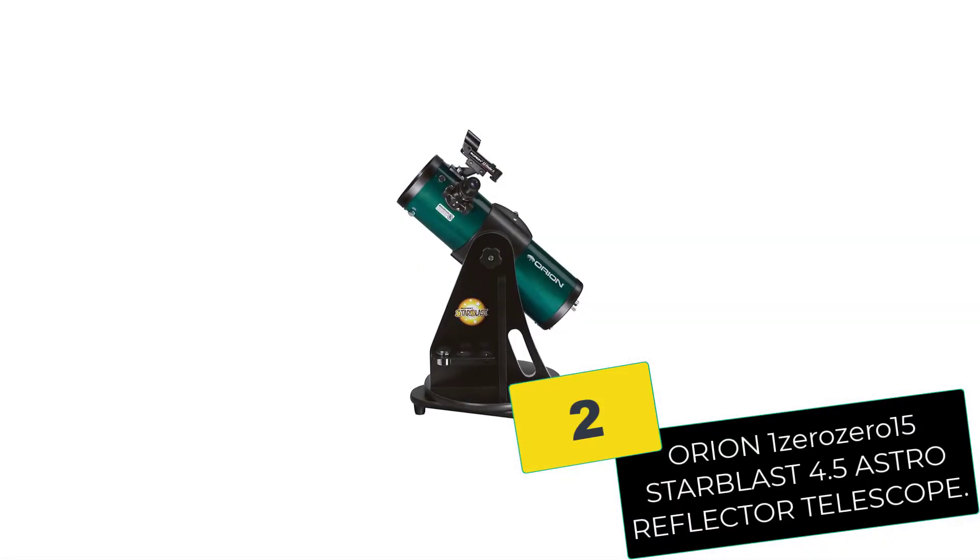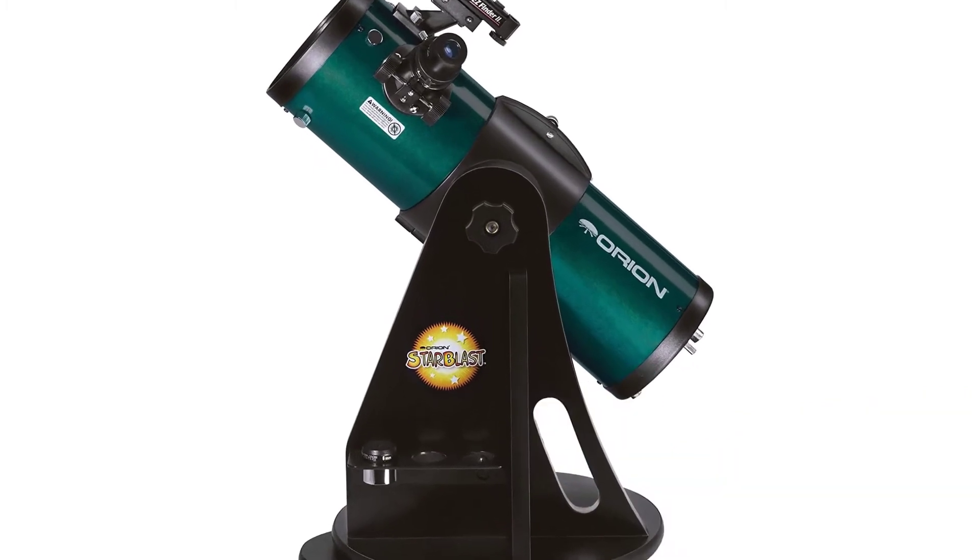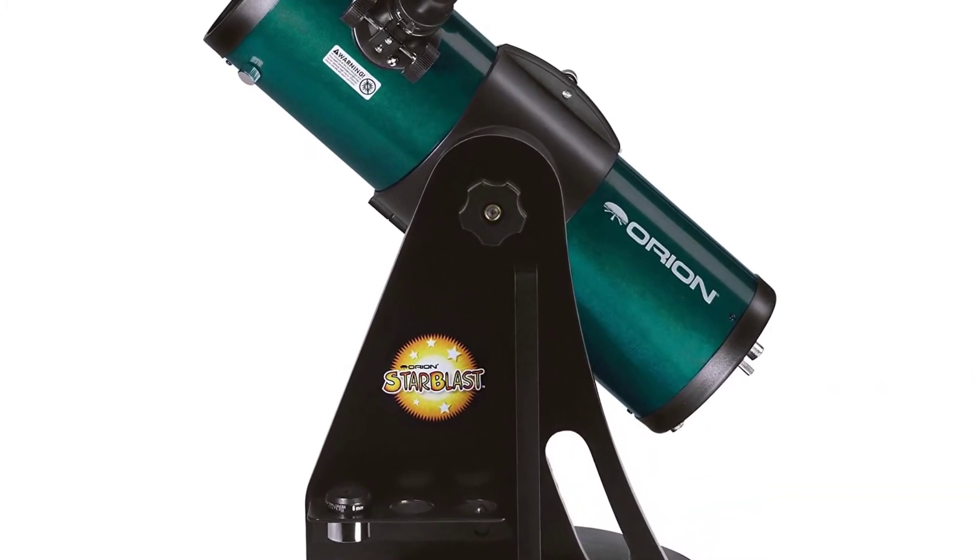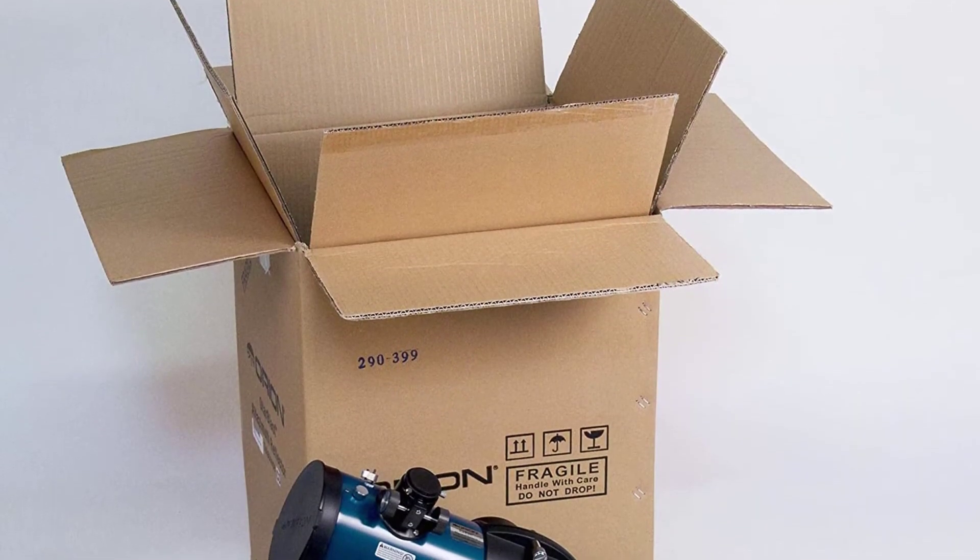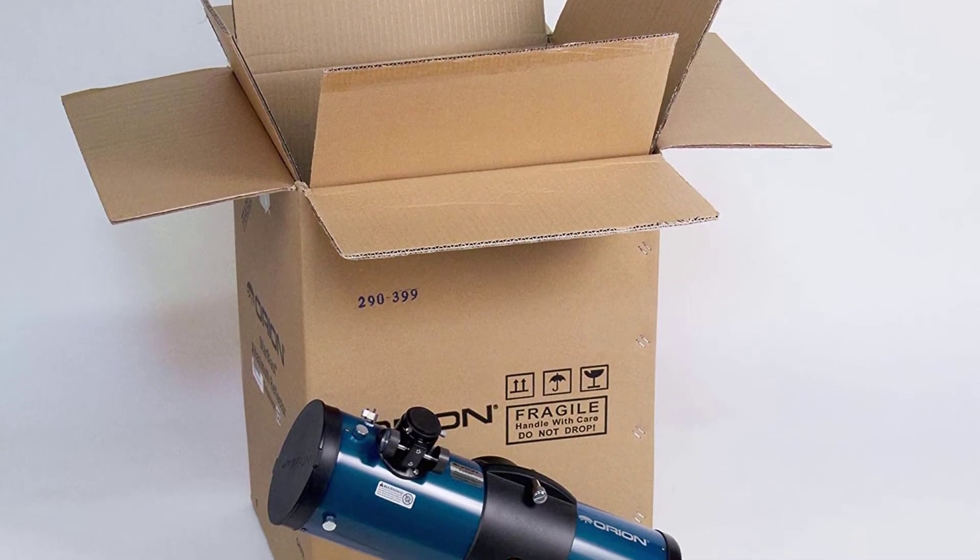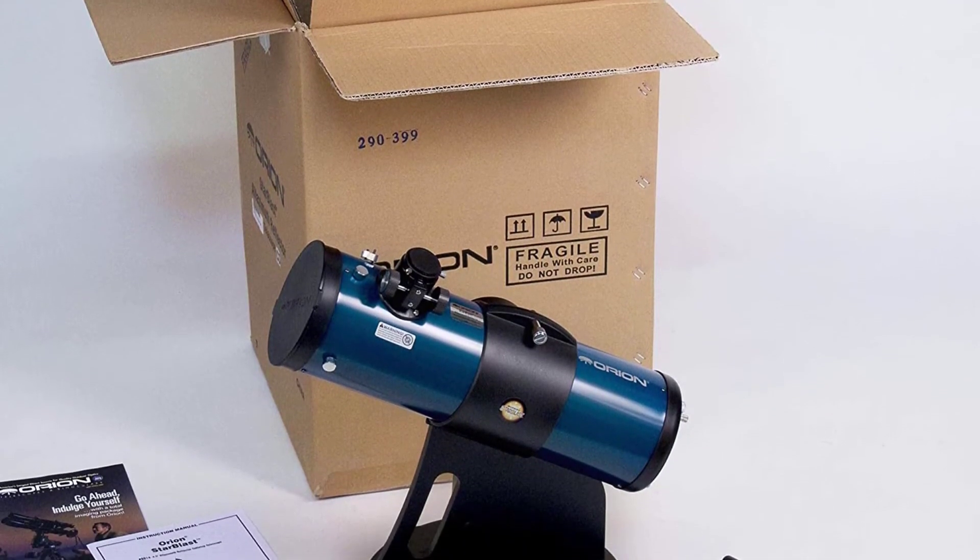At number two, we have the Orion 10015 Starblast 4.5 Astro Reflector Telescope. A great telescope that even kids as young as 13 can effectively and efficiently use, the Orion 10015 Starblast is a great option for beginners to the world of astronomy.